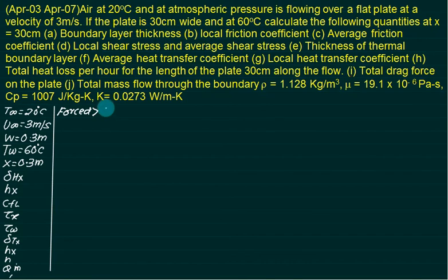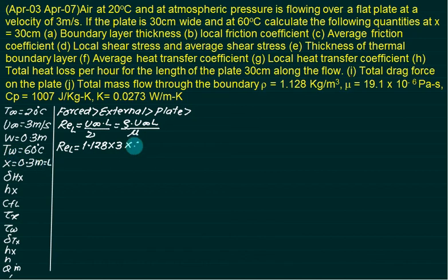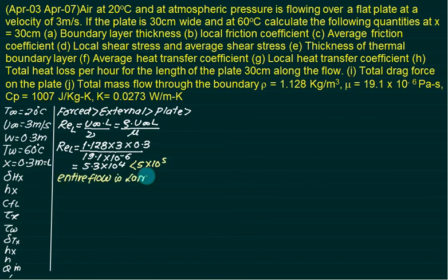The air is flowing over a flat plate — this is external flow, forced convection. To use the correct correlation, first find the Reynolds number at x = 0.3 m. Re_x = ρ·u∞·L / μ. With ρ = 1.28, u∞ = 3 m/s, L = 0.3 m, and ν = 19.1×10⁻⁶, we get Re_x = 5.3×10⁴. Since this is less than the critical Reynolds number of 5×10⁵, the entire flow is laminar.